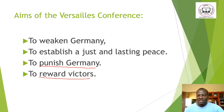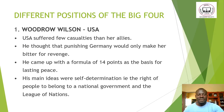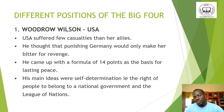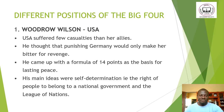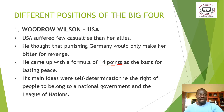The Big Four — Britain, USA, France, and Italy — each had their positions. The president of the USA, Woodrow Wilson, represented at the meeting. The USA entered the war in 1917 and had very few casualties. Wilson did not want to punish Germany because he thought it would make her bitter for revenge. Instead, he came with 14 Points which he thought would be best for lasting peace.